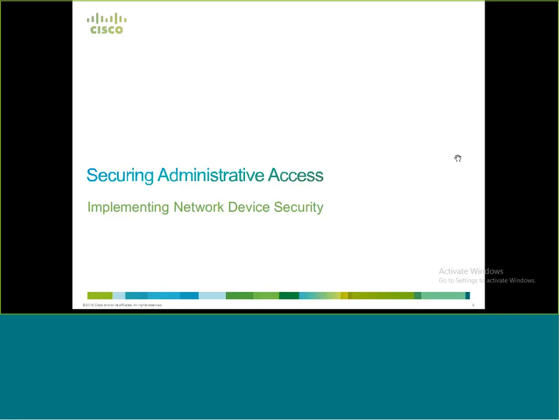First, we will look at securing administrative access. When administering Cisco devices, we can use a graphical user interface or command line. We will focus on the command line. Common methods include console access, Telnet, or SSH. For GUI access, we have HTTP or HTTPS. So how do you secure or protect that kind of access? That is what we talk about in this section.